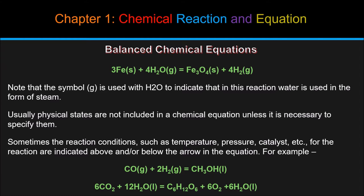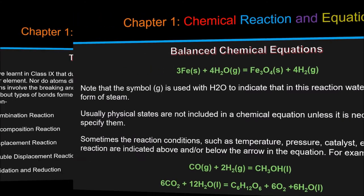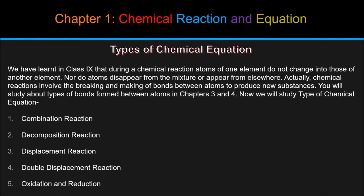In this equation symbol G is used with H2O to indicate that in this reaction water is used in the form of steam. Usually physical states are not included in a chemical equation unless it is necessary to specify them. Sometimes the reaction conditions such as temperature, pressure, catalyst, etc., for the reaction are indicated above and or below the arrow in the equation. For example, CO(G) plus 2H2(G) equals CH3OH(L). Another example is 6CO2 plus 12H2O(L) equals C6H12O6 plus 6O2 plus 6H2O(L). We have learned in class 9 that during a chemical reaction atoms of one element do not change into those of another element. Nor do atoms disappear from the mixture or appear from elsewhere. Actually, chemical reactions involve the breaking and making of bonds between atoms to produce new substances. You will study about types of bonds formed between atoms in chapters 3 and 4.